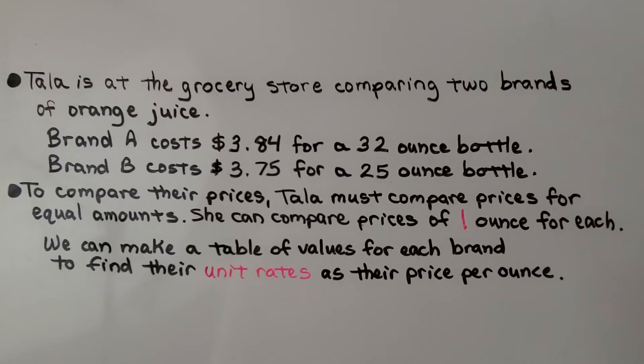So to compare their prices, Tal must compare prices for equal amounts. It's hard to compare 32 ounces to 25 ounces. She can compare prices of one ounce for each.